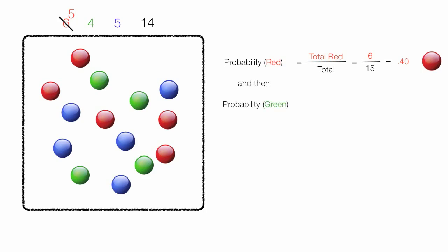I calculate the probability of picking a green marble, which is equal to the total green marbles out of the new total, which is equal to 4 green marbles out of 14 marbles, which is equal to 0.29. That's the probability of picking a green marble.